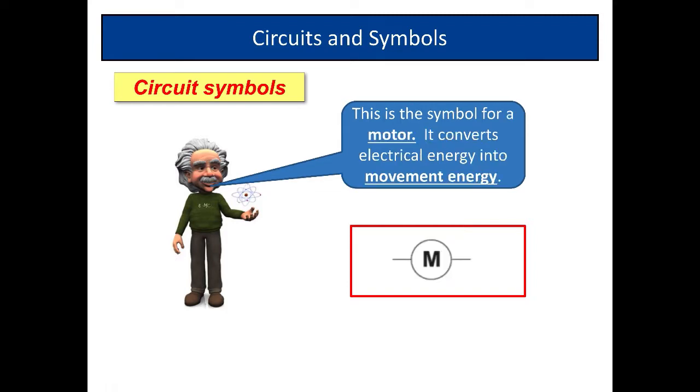And lastly this is the symbol here for a motor. Now an electric motor is a component that changes electrical energy into what we call movement energy or kinetic energy. So if you've got a hair dryer or a food mixer, that might have in it an electric motor. Right, so those are the components.